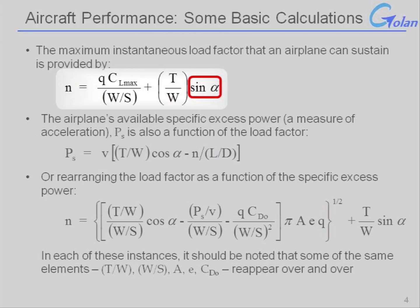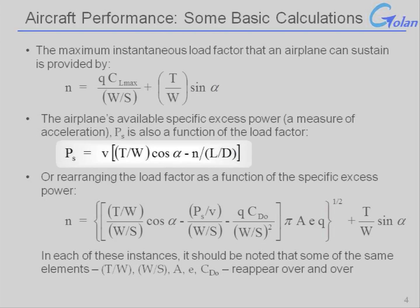If we move on to a specific excess power measure — which is a measure of acceleration or climb rate — we will see that specific excess power will decrease with increased load factor. In other words, if I'm at a higher G level, I have less excess energy available to accelerate with. Similarly, if I'm at a lower G level, I have more excess energy and I can climb or accelerate.